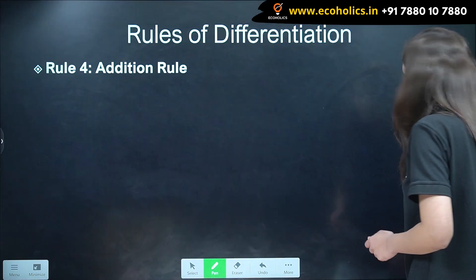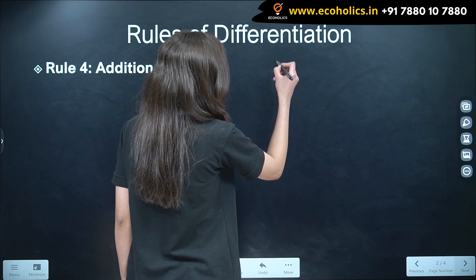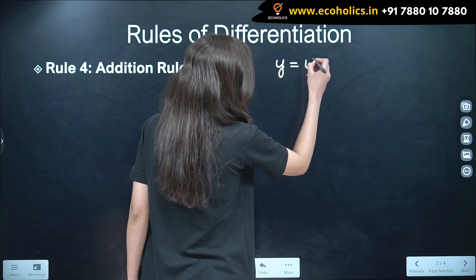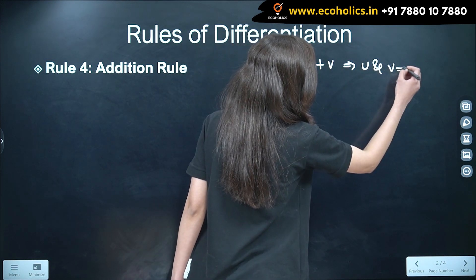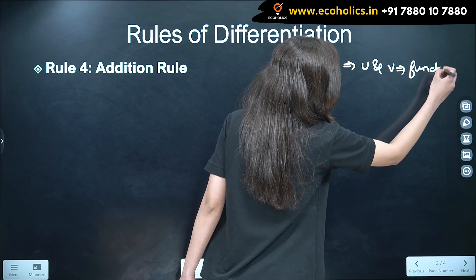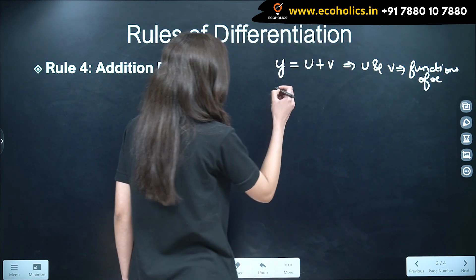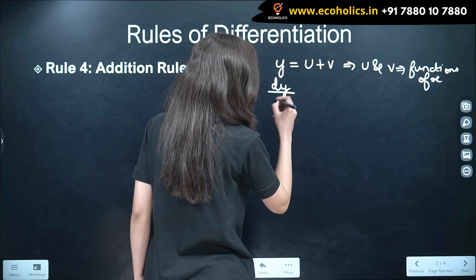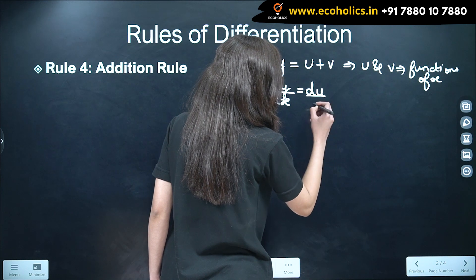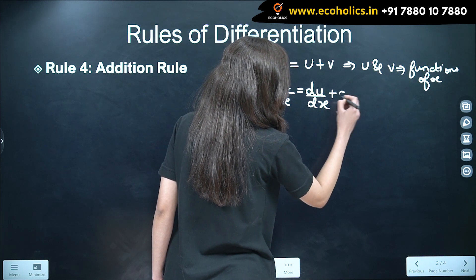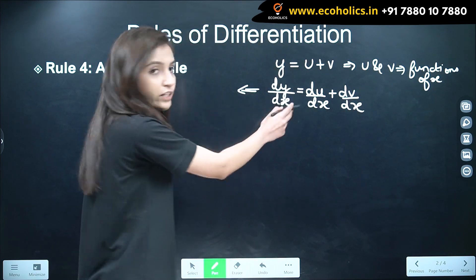So, rule number 4: the addition rule. If we have y is equal to u plus v, where u and v are differentiable functions of x, then dy by dx will be equal to du by dx plus dv by dx. And this becomes our addition rule of differentiation.